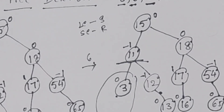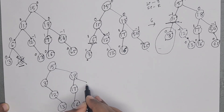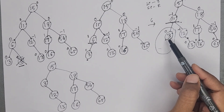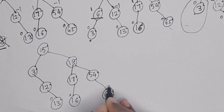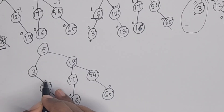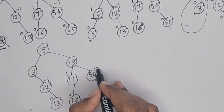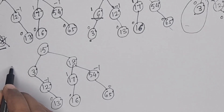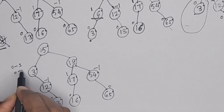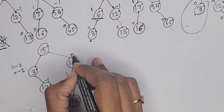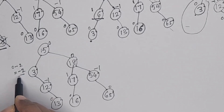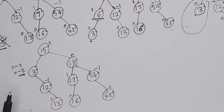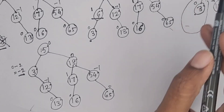After replacing 11 with inorder predecessor 3, there is no left subtree for node 3 now. We write balance factors again. Leaf nodes have balance factor 0. For node 12: 0 minus 1 = minus 1. For node 17: 1 minus 1 = 0. Node 3 has no left subtree, so left subtree height is 0 and right subtree height is 2: 0 minus 2 = minus 2. For node 18: 2 minus 2 = 0. For node 15: 3 minus 3 = 0. Node 3's balance factor is minus 2 — it is unbalanced.